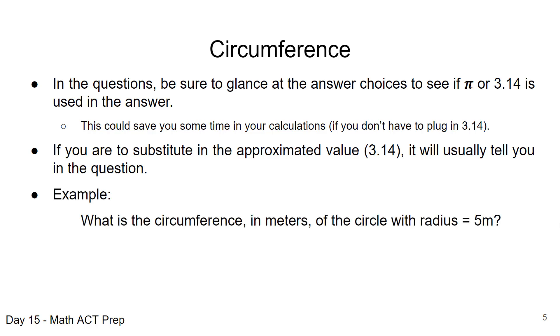And let's just take a look at an example here. It says, what is the circumference in meters of the circle with radius equals 5 meters? So we're going to use our formula, C = 2πr, since we were given radius, and when we plug that in, the 5 for radius, we can just multiply 5 times 2, and we get that circumference is equal to 10π.